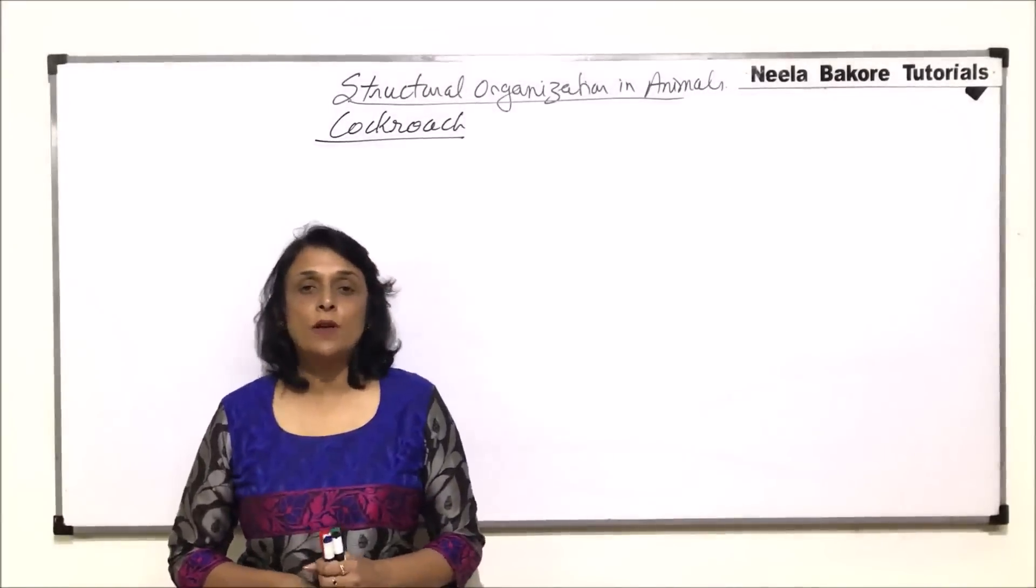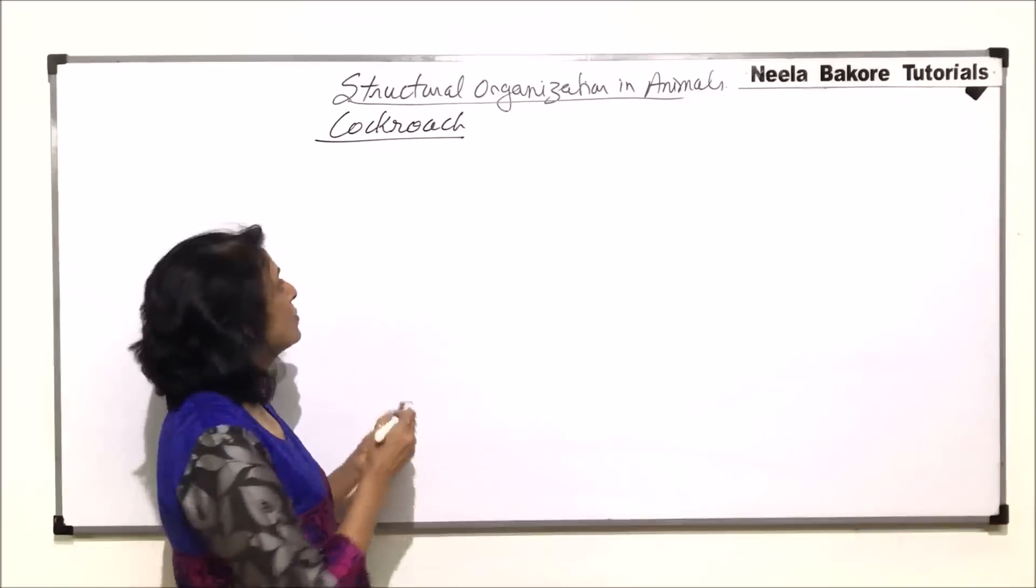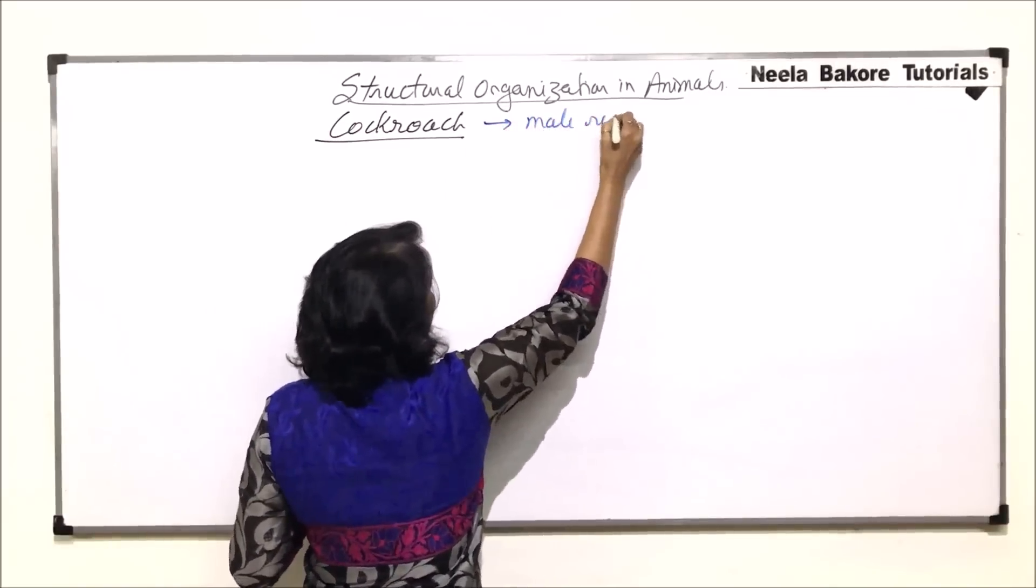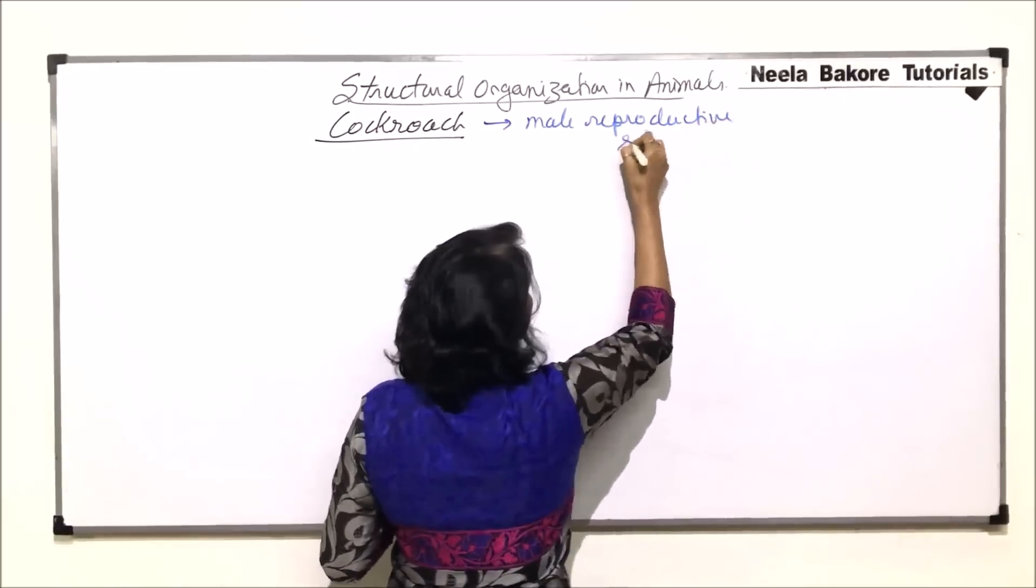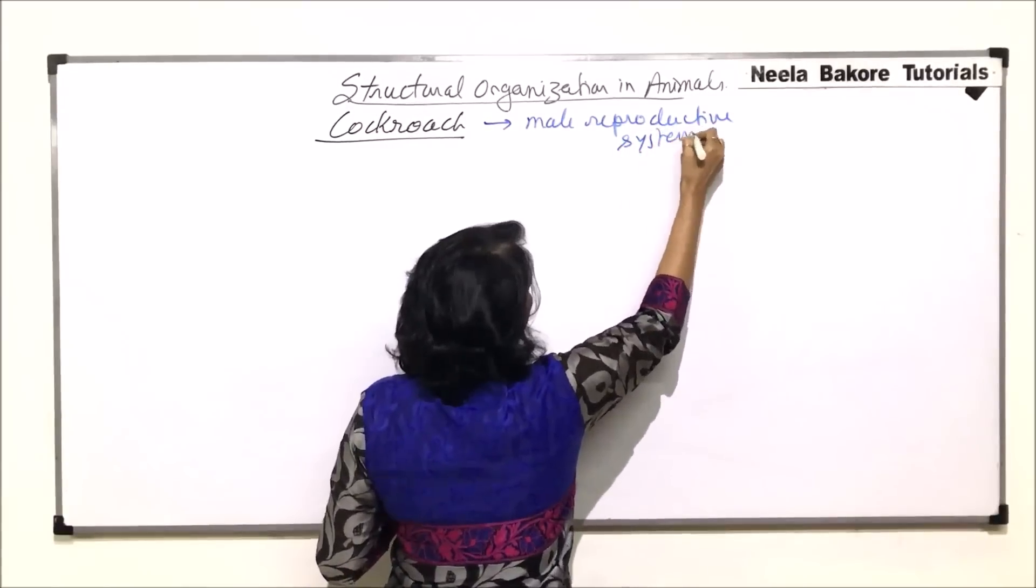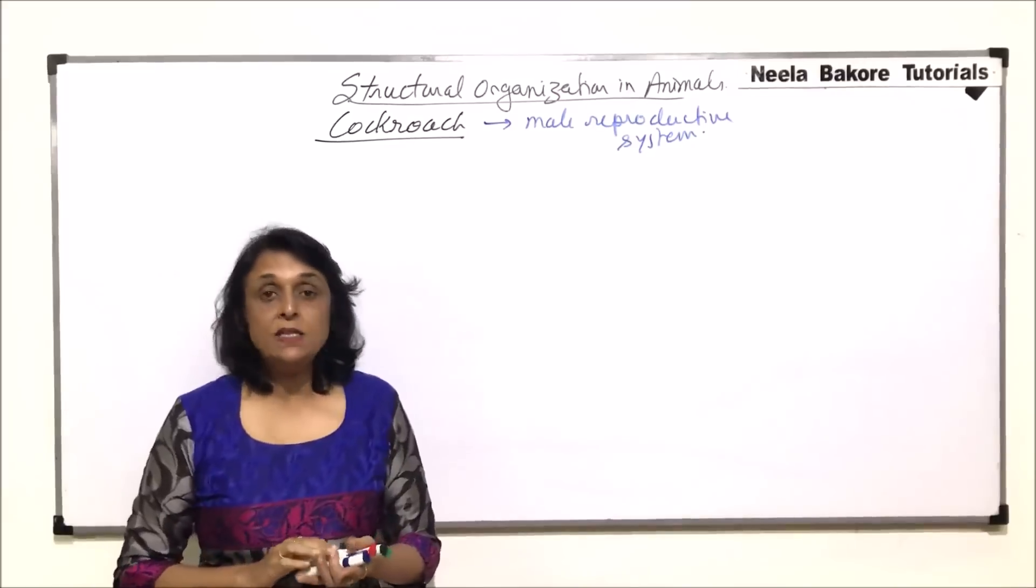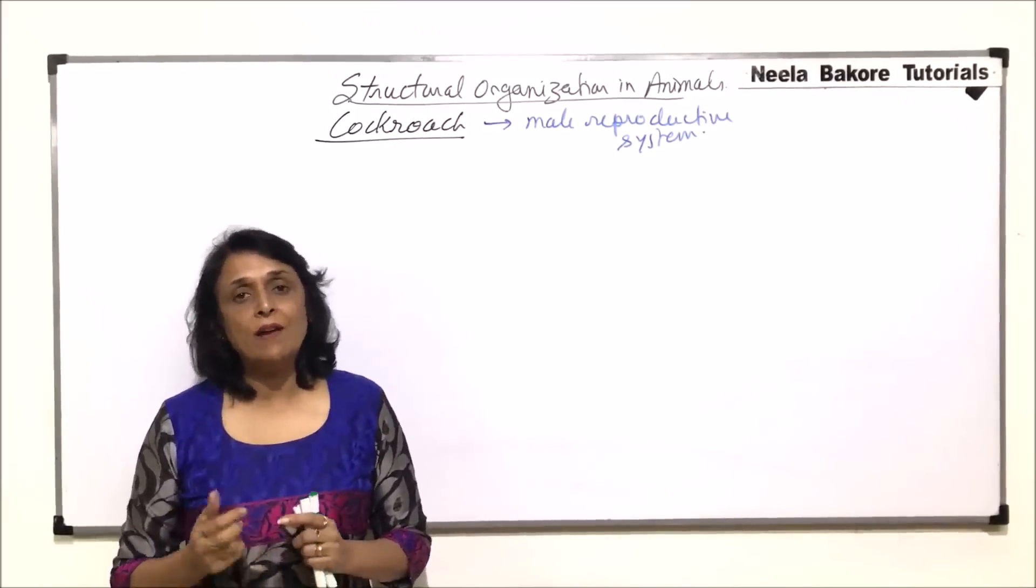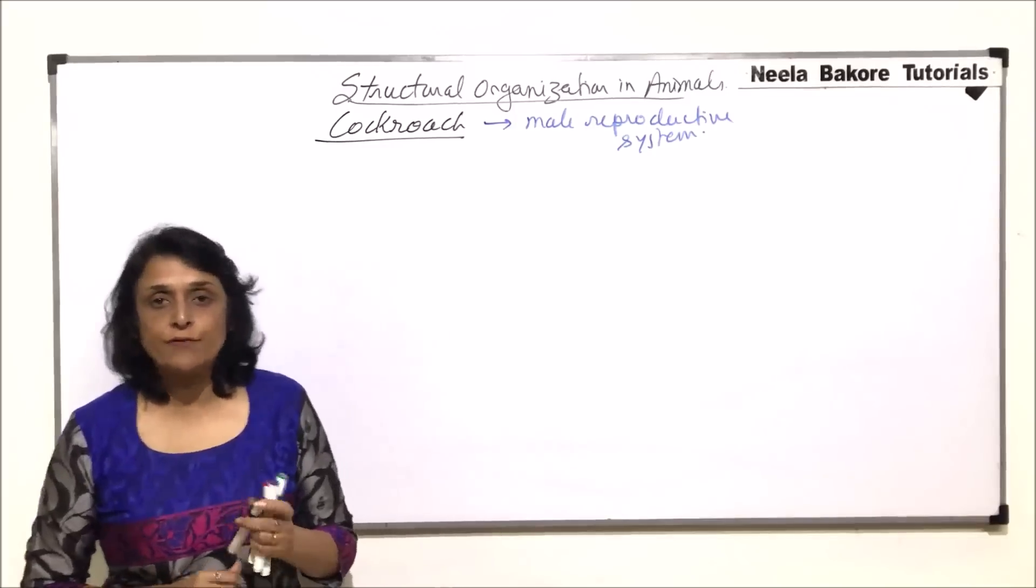In this part, we will be talking about the male reproductive system in cockroaches. In cockroaches, the sexes are separate. That means one cockroach would have only male reproductive parts and the other would have only female. That means they show sexual dimorphism.